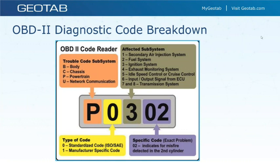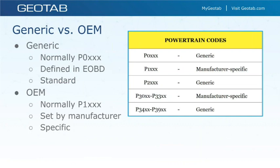OBD-2 diagnostic codes are broken down into a letter and numbers. The letters are: B for body, C for chassis, P for powertrain, and U for user. The most popular codes are P — powertrain codes. Looking at the chart: the first character identifies the trouble code subsystem; the second character tells you if it is an OEM or generic code; the third character identifies what subsystem has the issue; and the final characters are specific to the concern. For example, with P0302 for an engine misfire: P indicates powertrain, 0 means it is a standard generic code, 3 points to the fuel and ignition system, and 02 points directly to where the problem occurred.